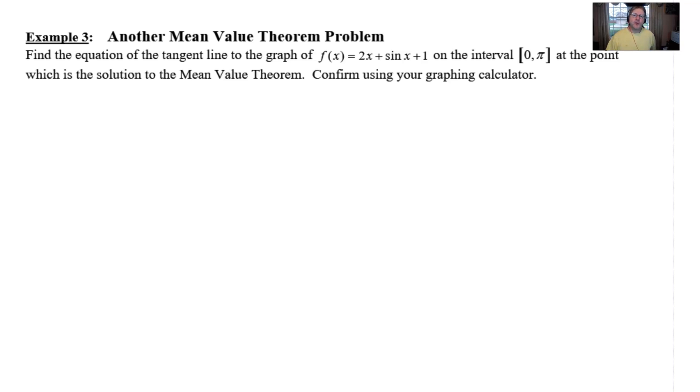Now, normally a mean value theorem problem requires that you have to write or state the conditions at which the mean value theorem applies. This particular problem, I'm not going to require that we do that. It's sort of implying that the mean value theorem is intact because we are going to expect this solution. So you want to keep in mind of that. It's very important that you state those conditions if you're asked to see if the mean value theorem does apply. So we're going to start off by taking the derivative of f(x). It doesn't matter really if you take the derivative or find the slope. It's your choice. And if I take the derivative first here, I get 2 + cos(x).